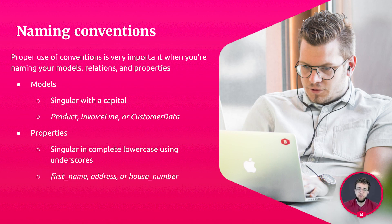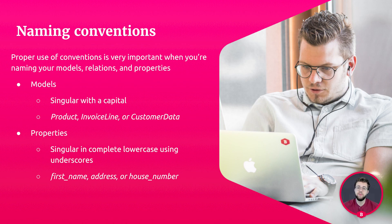For properties, we also write them in singular and complete lowercase. But whenever there's a space between the words, we use an underscore. For example, first_name — completely lowercase, and the space in between is filled with an underscore.